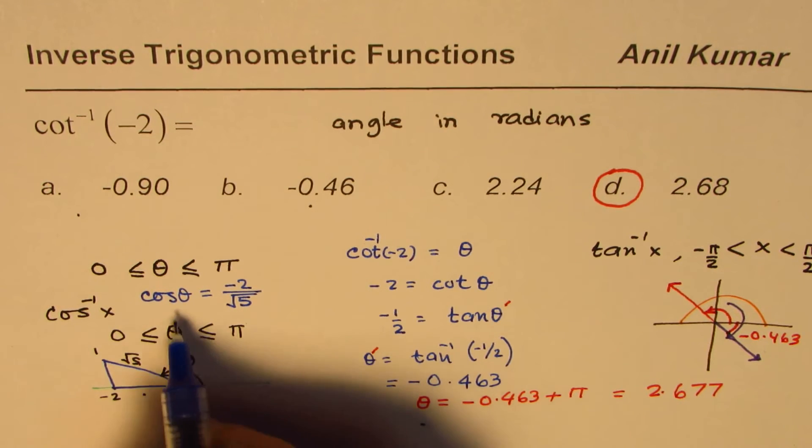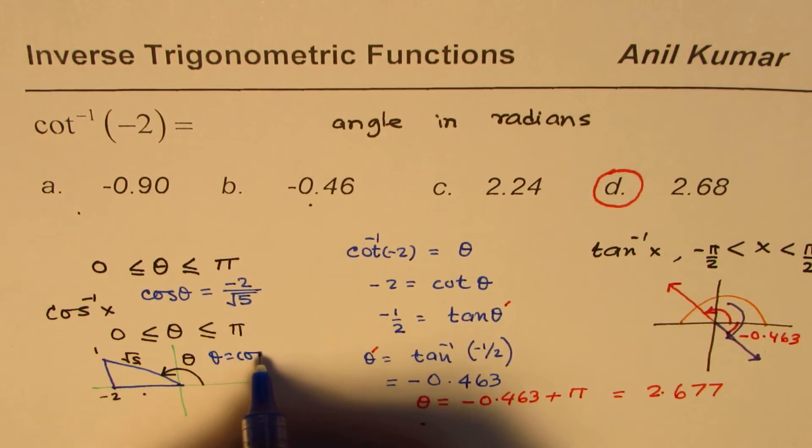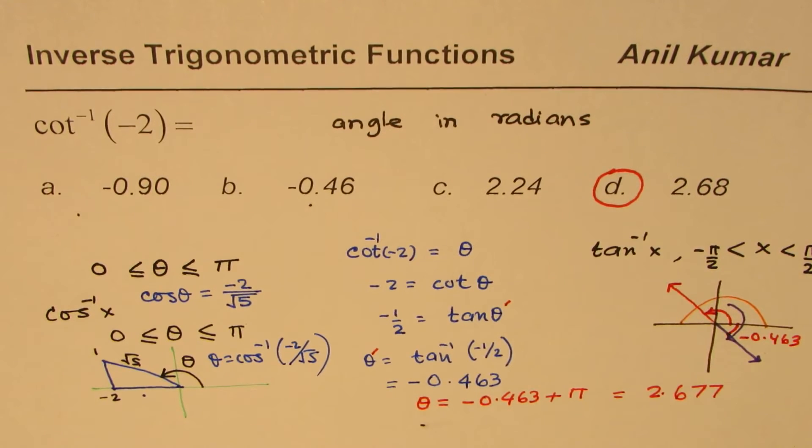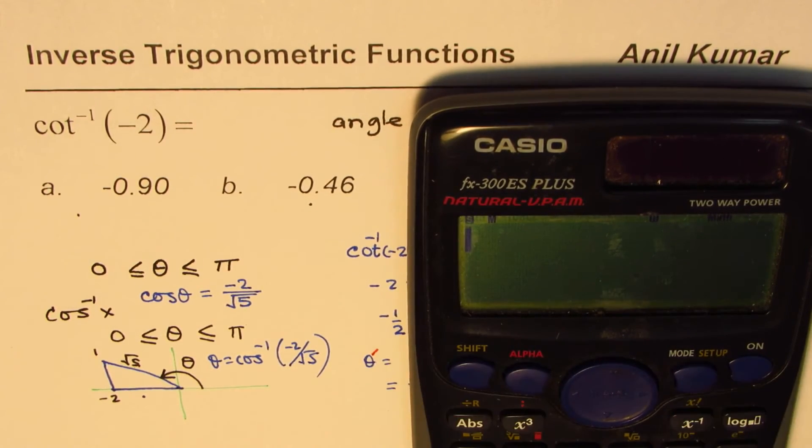Minus 2 over square root 5. So from here we can convert and write what theta is in terms of: cos theta equals to cos inverse of minus 2 over square root 5. Right? So let's use the calculator once again and find the answer using cosine inverse.